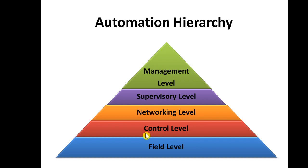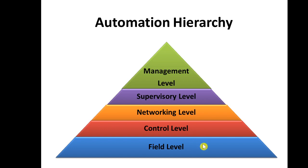For example, if we want to heat some object to 80 degrees, the system continuously monitors the temperature. When it reaches 80 degrees, a signal is sent to the control level, and from the control level a signal goes to other devices like a cooling system, or it turns off the heating system. This work is done by the control level, which may be a PLC, PAC, or embedded system.